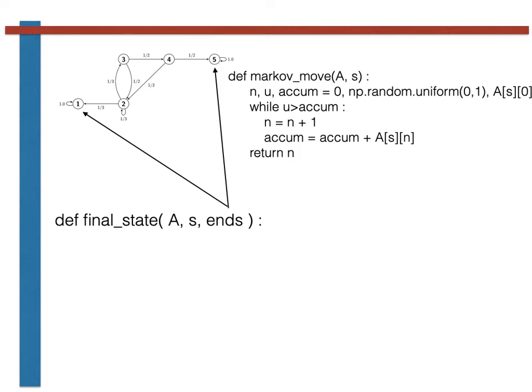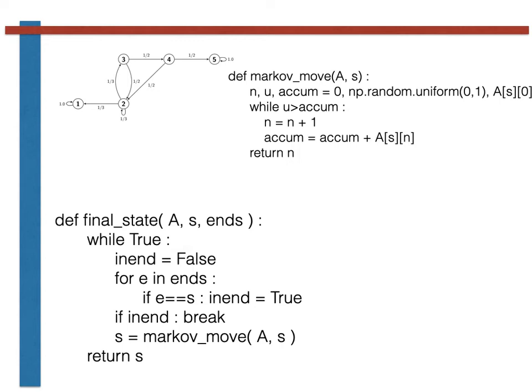The code for generating the final state is going to look something like this. We use a while loop here as we did in the code for generating the hitting time because we want to continue generating moves until we arrive in one of the recurrent states.